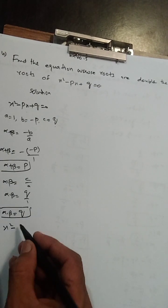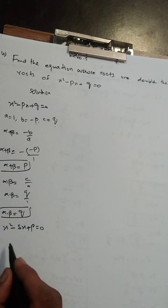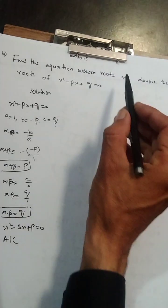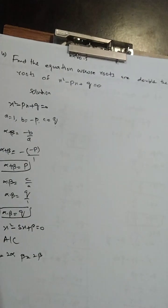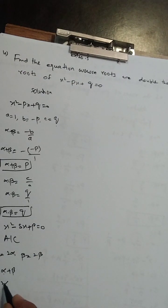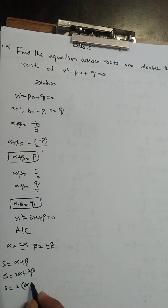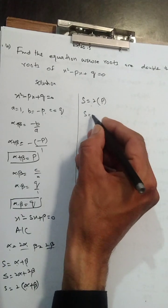Equation banane ki formation: x² - (sum of roots)x + (product of roots) = 0. Condition: roots are double, so alpha* = 2alpha aur beta* = 2beta. Sum = 2alpha + 2beta = 2(alpha + beta) = 2p. Product = 2alpha × 2beta = 4 × alpha×beta = 4q.